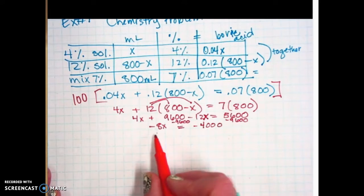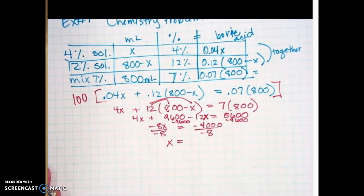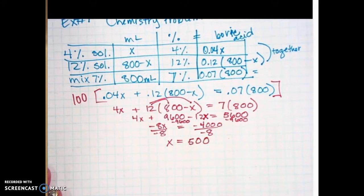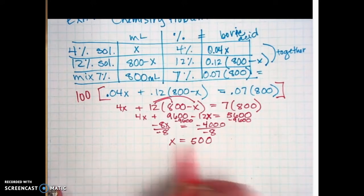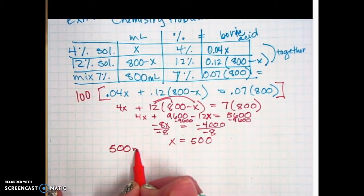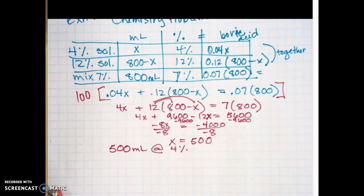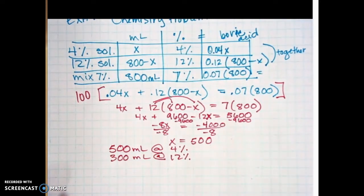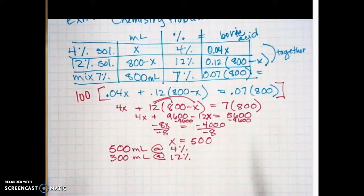If I have a negative and a negative, that's good because when I divide by negative 8, they both become positive. So it's x equals 500. That means of the 4% solution, we're going to have 500 milliliters. So 500 milliliters at the 4%. Subtract that from the 800, that means you're going to have 300 milliliters at the 12%. You mix those two together, you're going to get 800 milliliters of a 7% mixture.